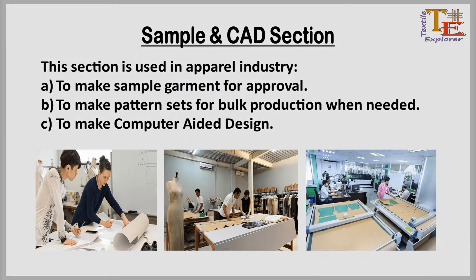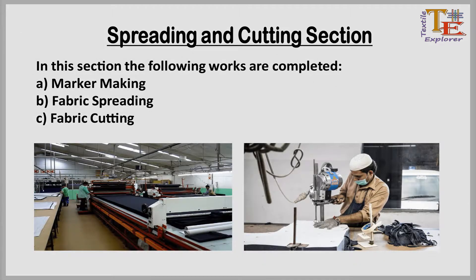The first section of the garment manufacturing process is the sample and cut section. This section is used in the apparel industry to make sample garments for approval, to make pattern sets for bulk production, and to make computer-aided designs. The second section is the spreading and cutting section.